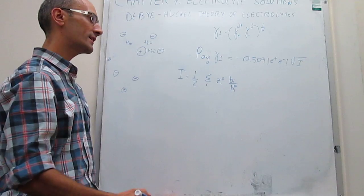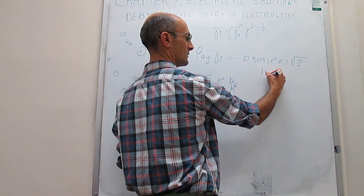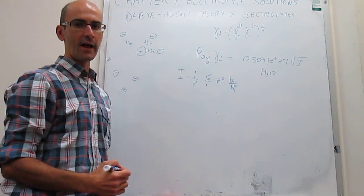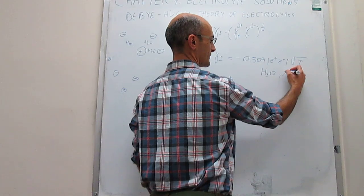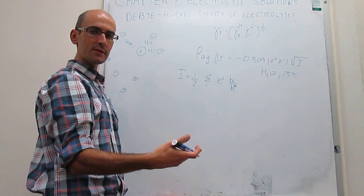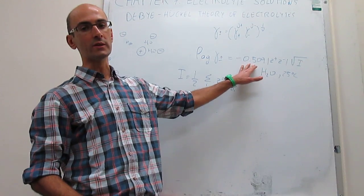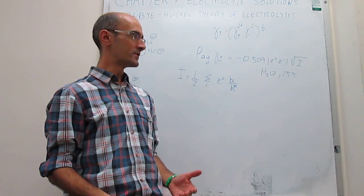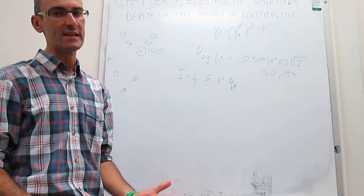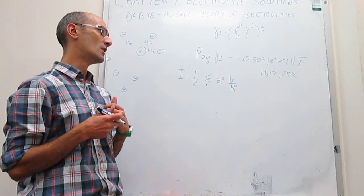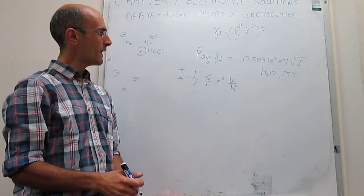There are two things we have to consider: this is only valid for water as the solvent, and the temperature has to be 298 Kelvin or 25 Celsius. If you have a different solvent or temperature, then this constant would get modified. Just so that we don't have to remember how that constant changes for various solvents and temperatures, we're going to constrain all our calculations to water and 298 Kelvin.